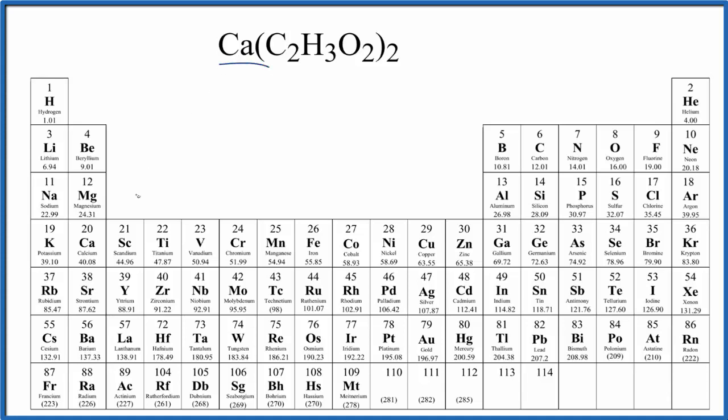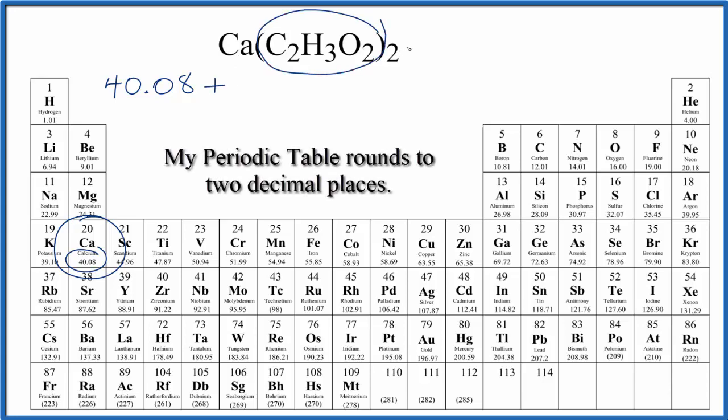Calcium is right here, 40.08, and the units are grams per mole. I won't write those right now, let's write those later. Then we have this whole acetate ion here, and we actually have two of them. So what we'll do is calculate the molar mass for the acetate ion and then multiply it by two.